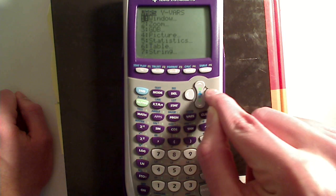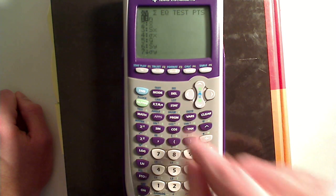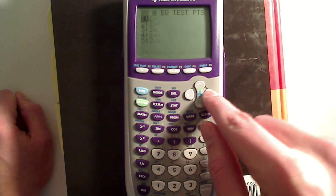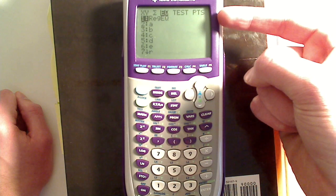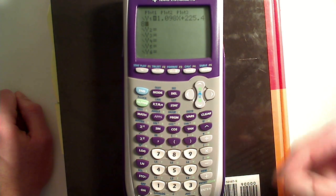The way you do that is you go to VARS, down to statistics. That's option five. Now we have a few more options. We're going to arrow over to EQ. And the first option there is regEQ, which stands for regression equation. We're just going to pull it up. That's the exact same equation as we had on the home screen.